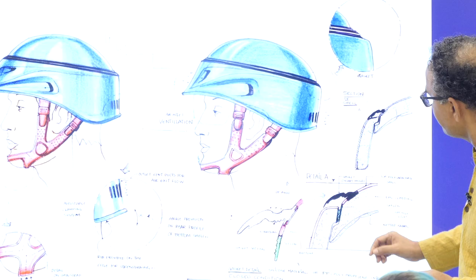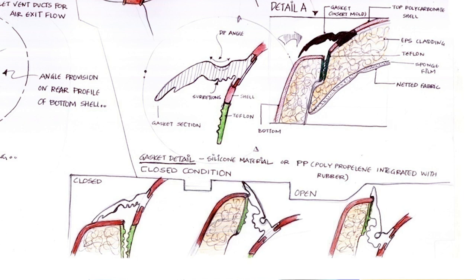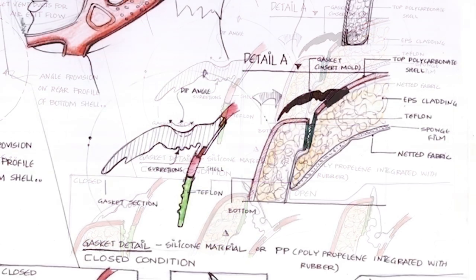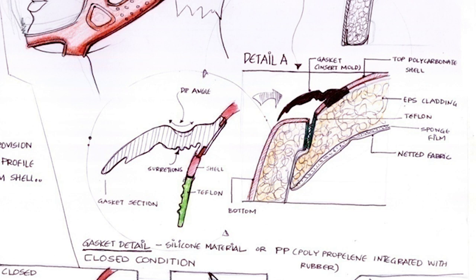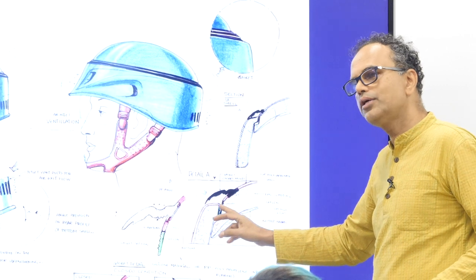Then you also have this very interesting rubber. This rubber is very important — because if it is raining, the water should not go in but the helmet should still collapse and open up. So the rubber detailing is very critical. These are the initial sketches of the rubber detailing — how when the helmet goes in, the rubber becomes straight, and when you push it out, how the rubber blocks the gap. This was a very large piece of work and we nearly spent three months working on this one detail.